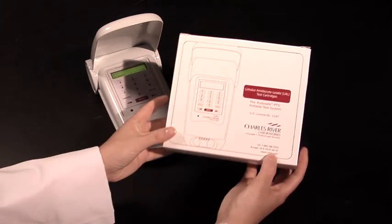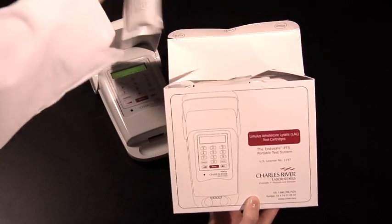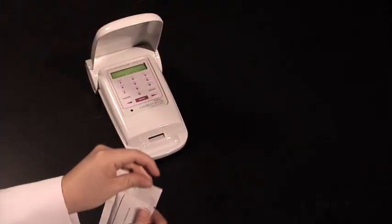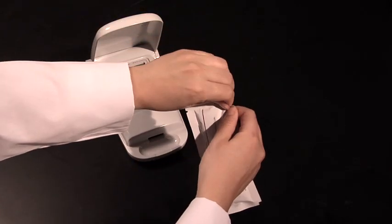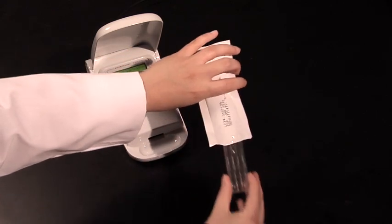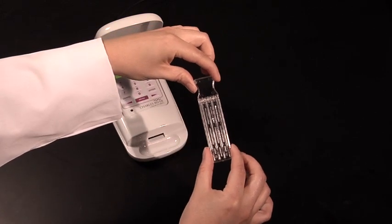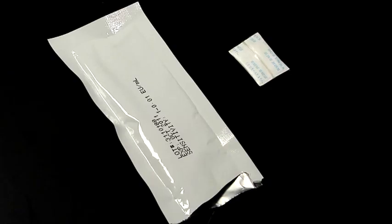Before doing so, if you have refrigerated the cartridge, please remove it from the refrigerator and allow it to warm to room temperature unopened while still in its pouch. Once at room temperature, please remove your cartridge from its pouch by only touching the edges of the cartridge. You will notice there is a desiccant in the pouch which can be discarded.